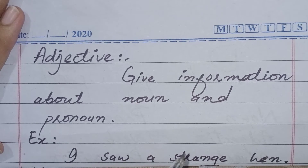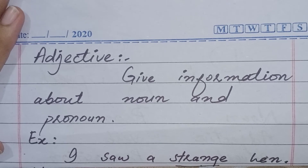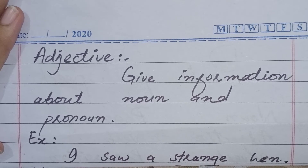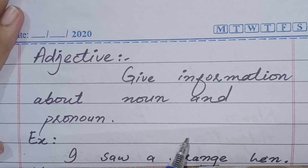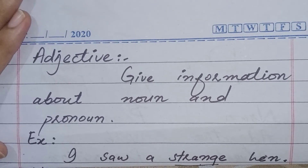One more thing to keep in mind about adjectives: we write the adjective before a noun. For example: ugly face, a black shirt, or pretty girl.